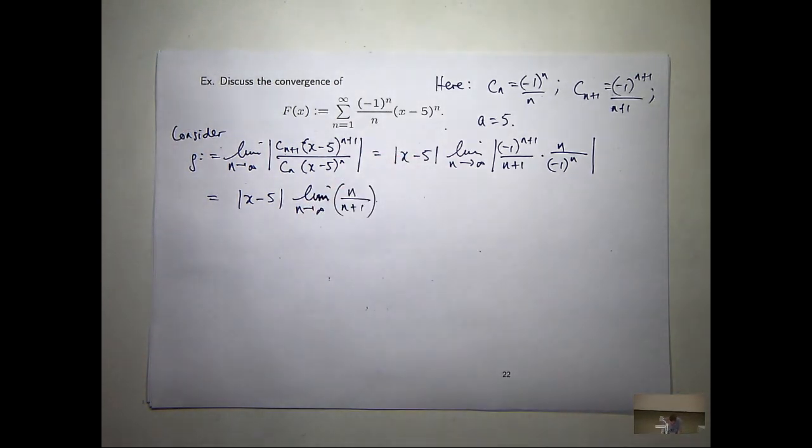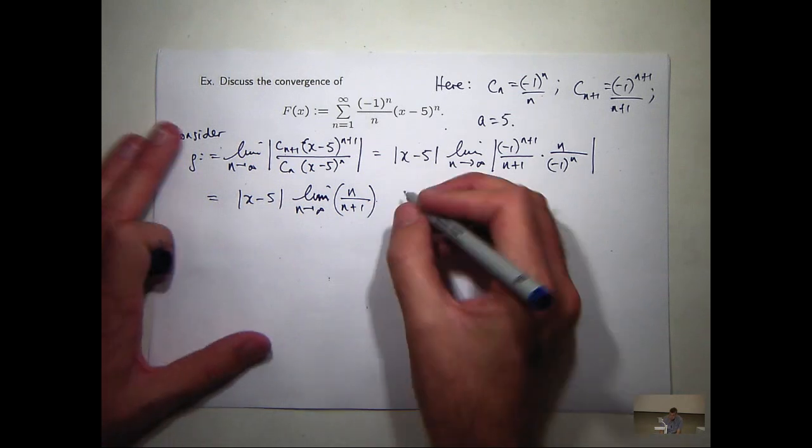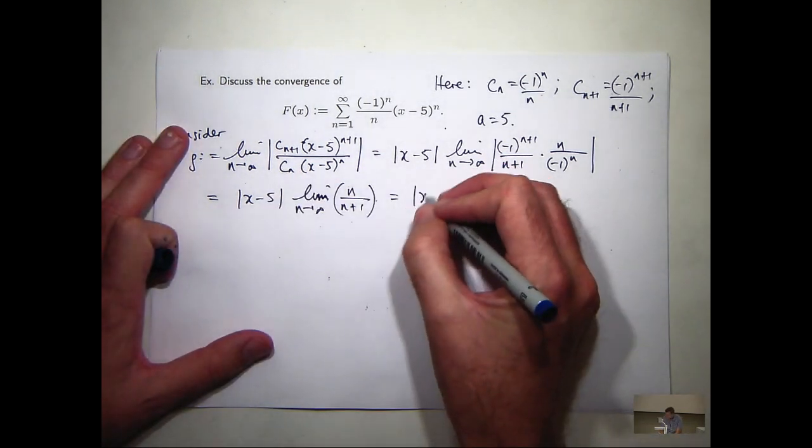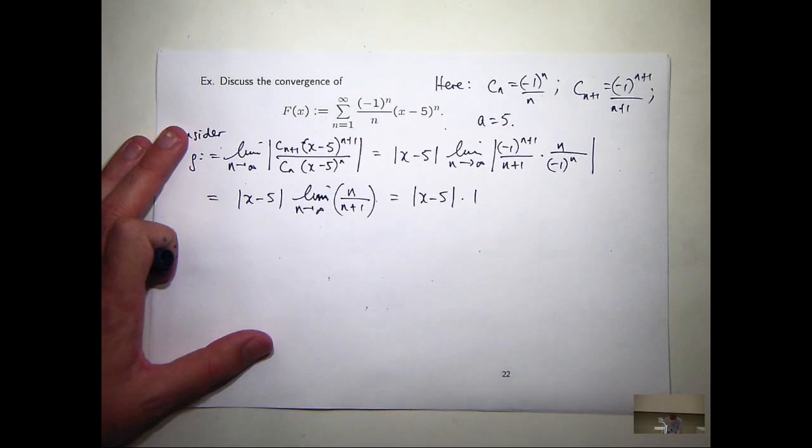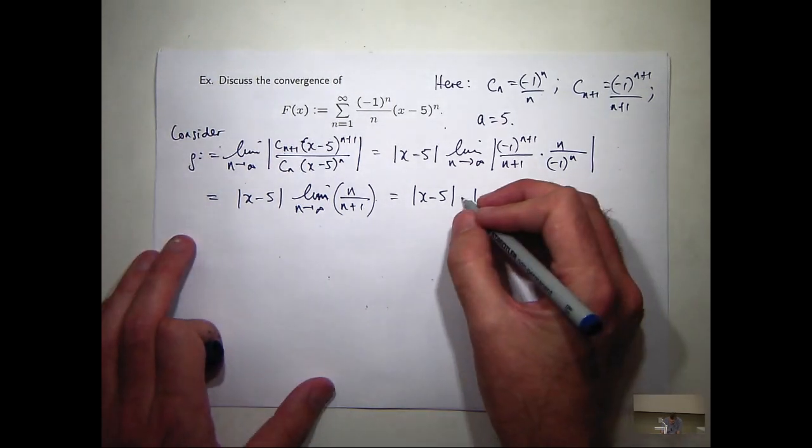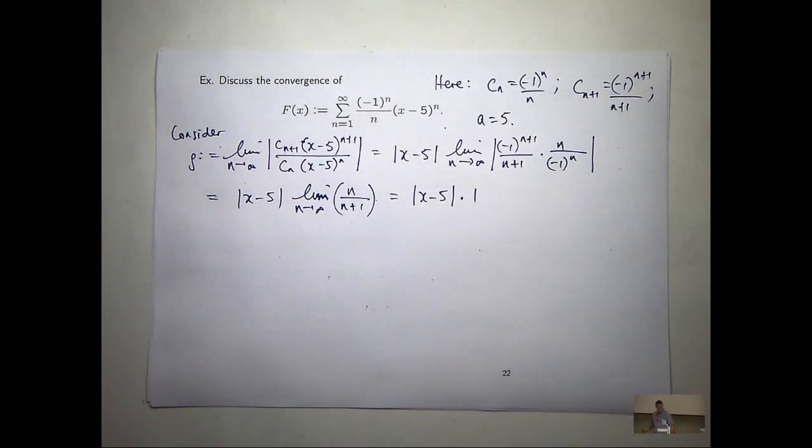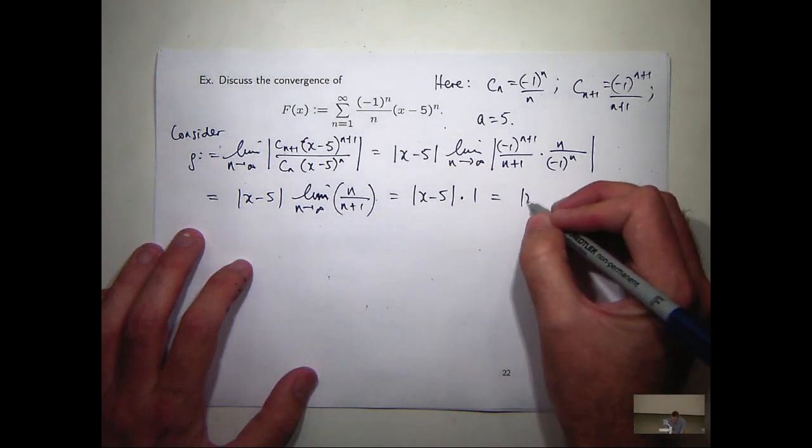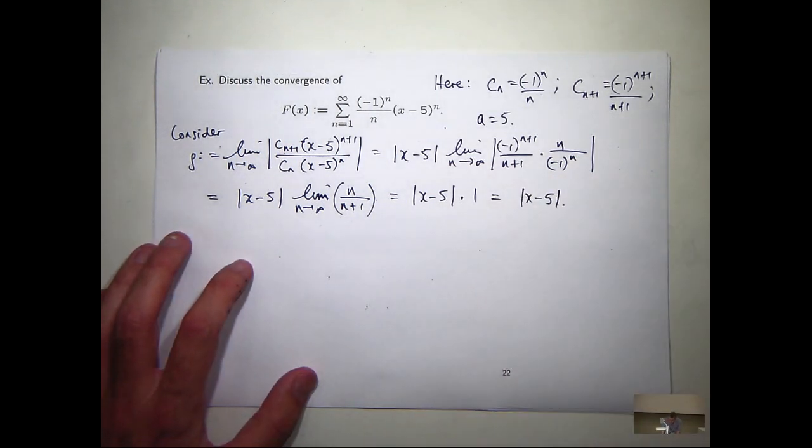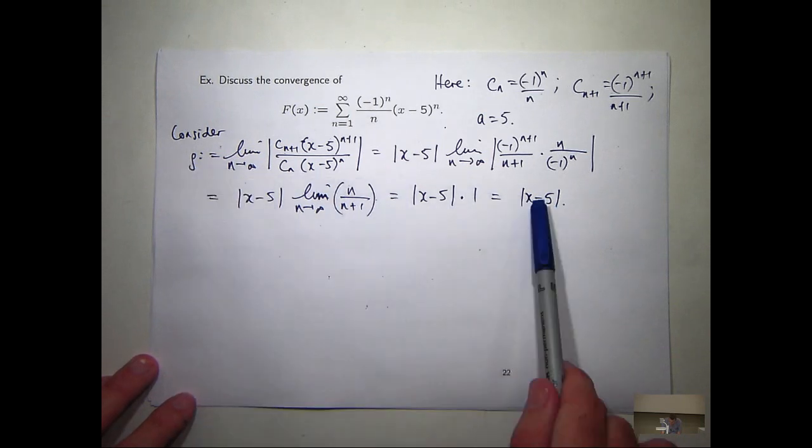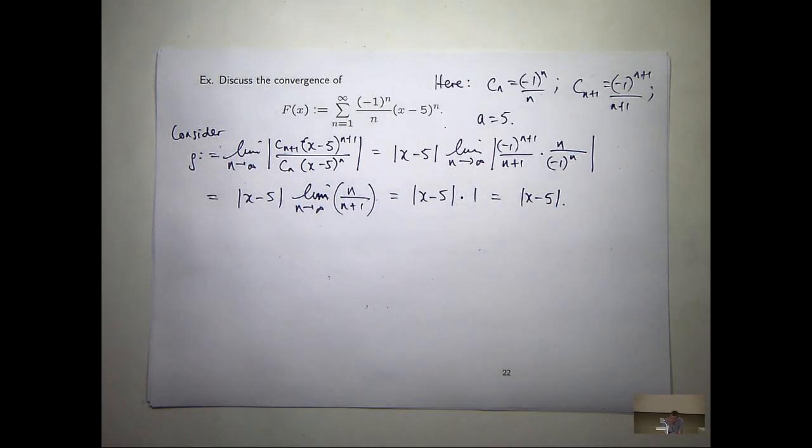So, what's the limit? The limit's going to be 1. So, now all I really need to do is find out what x values make this strictly less than 1. Okay, so this is our limit of our ratio. We want to find the x values that make that ratio less than 1.